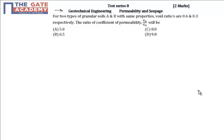This question is from geotechnical engineering, from the topic permeability and seepage. The question asks for the ratio of coefficient of permeability, ka by kb, where these soils are having the same properties and void ratios are 0.6 and 0.3 respectively for A and B.